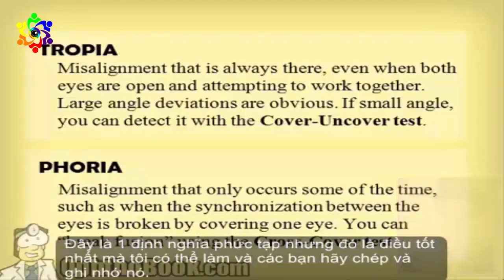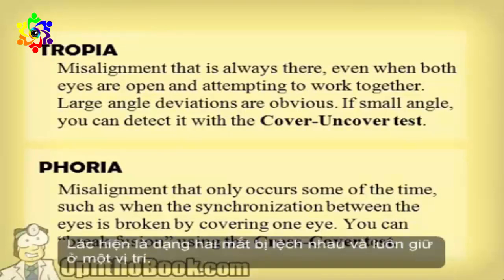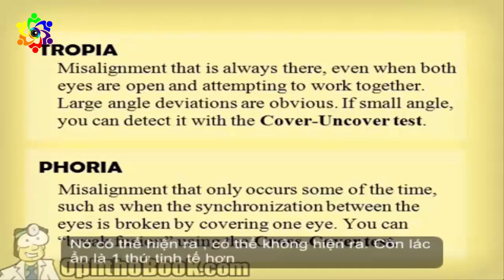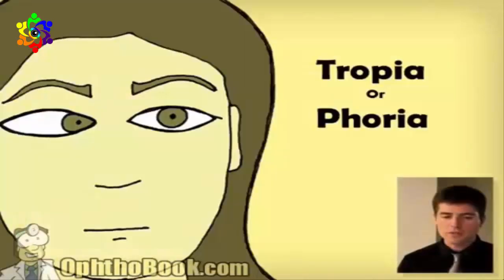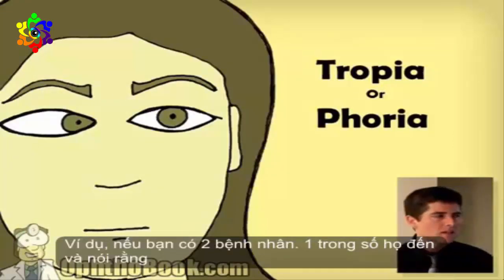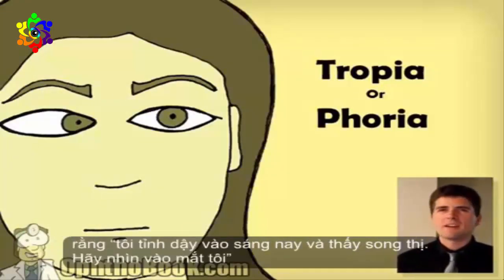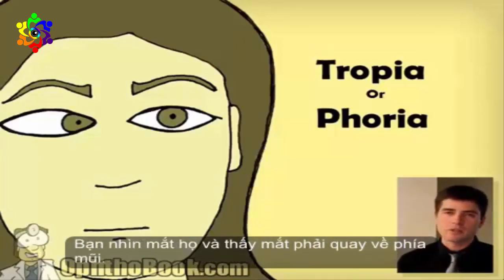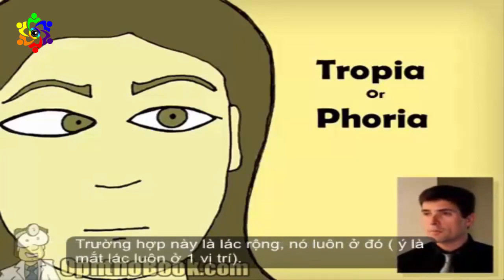This looks like a complicated definition, but the idea is that a tropia is a misalignment between the eyes — it's always there. It may be obvious, it may not be obvious. For example, if a patient comes in and says they woke up this morning with double vision, and you look at their eye and the right eye is turned in towards the nose — this is a large tropia. It's always there, it's very big.